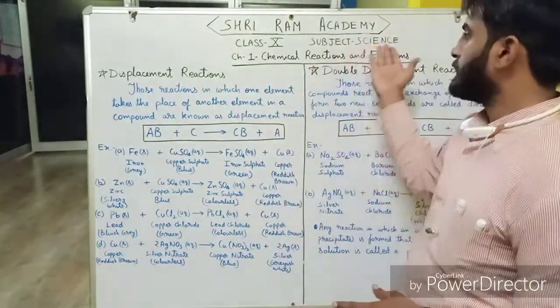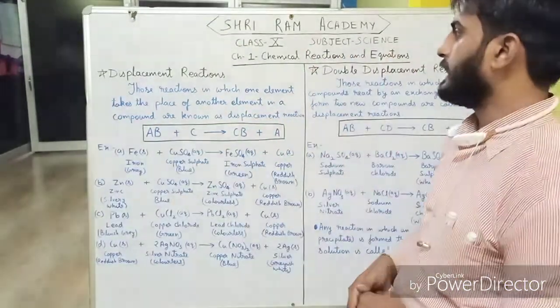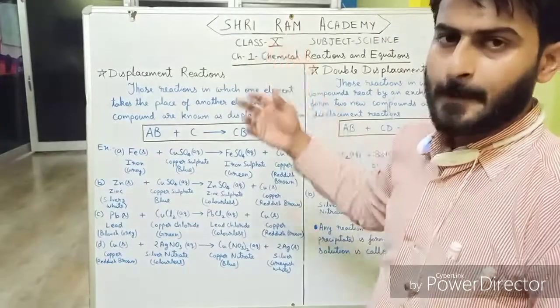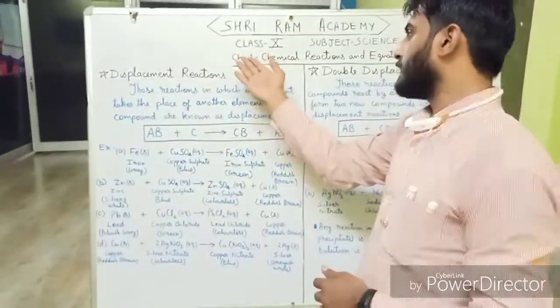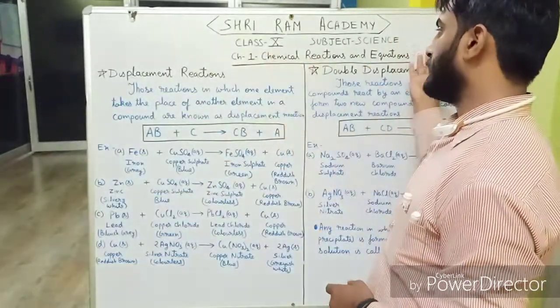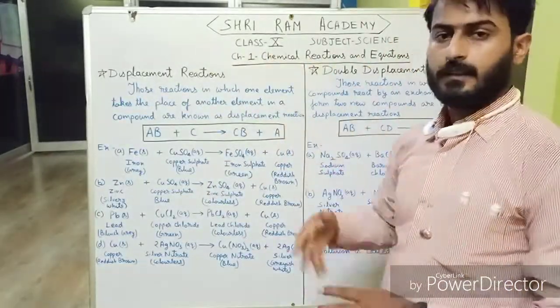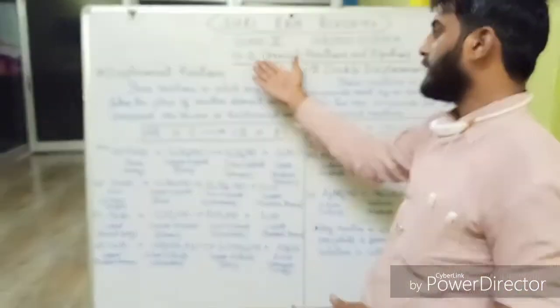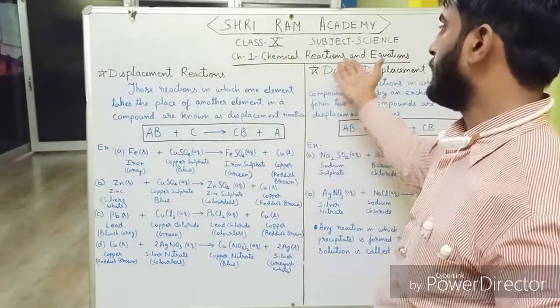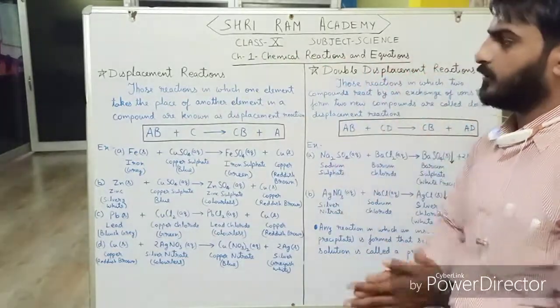So students, in this class we will be starting the subject of science for class 10th. This is a series of lessons for class 9th — that is chapter number 1, which is Chemical Reactions and Equations.